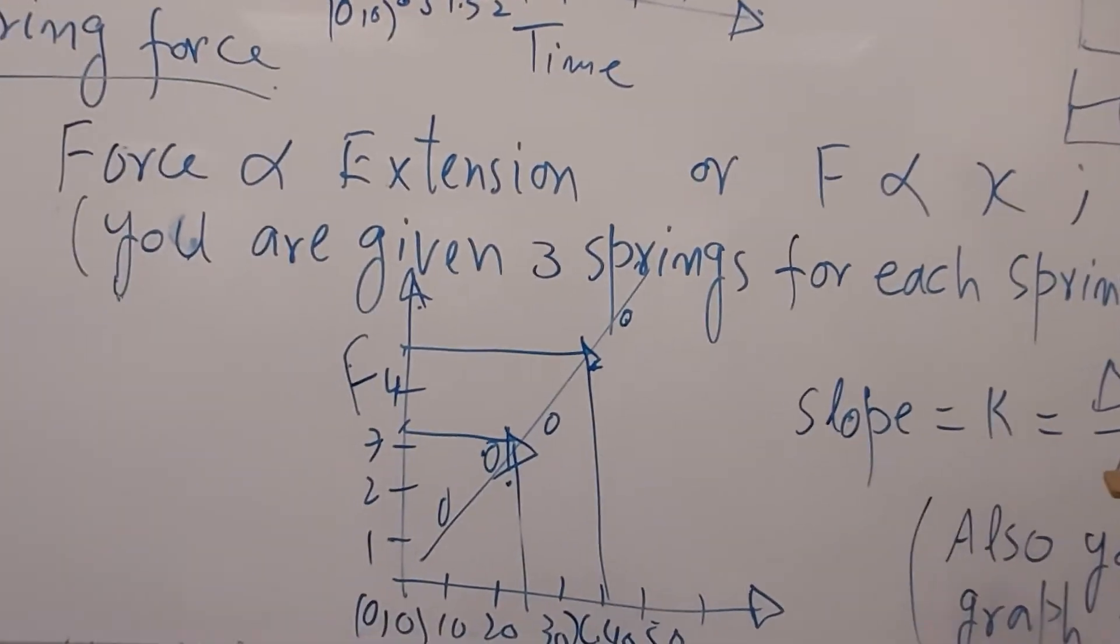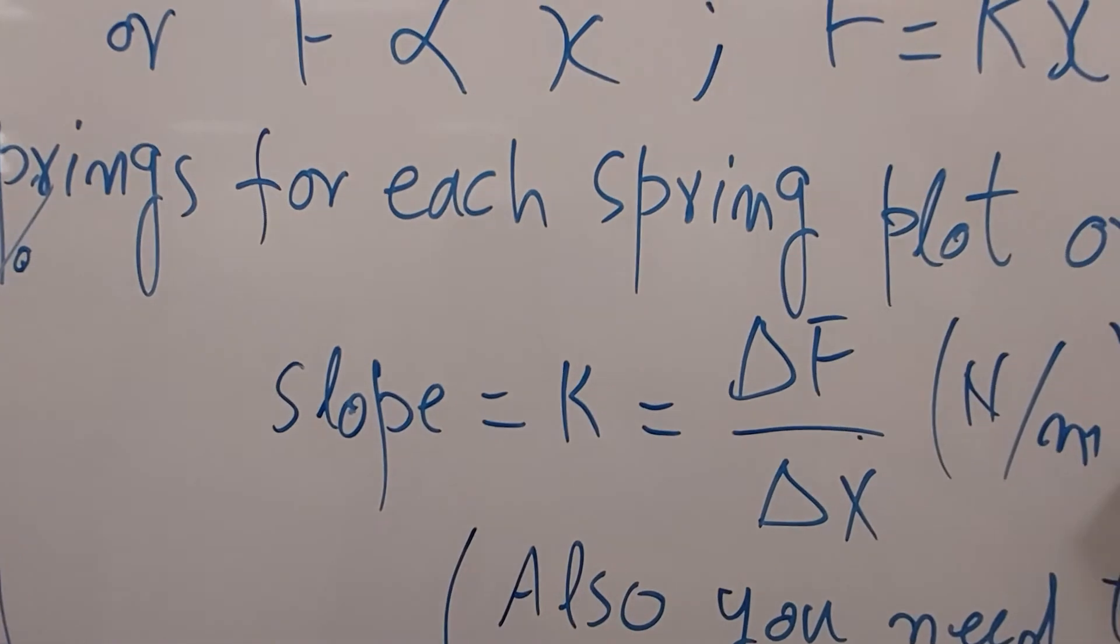The slope will be k equals delta F over delta x in newton per meter.